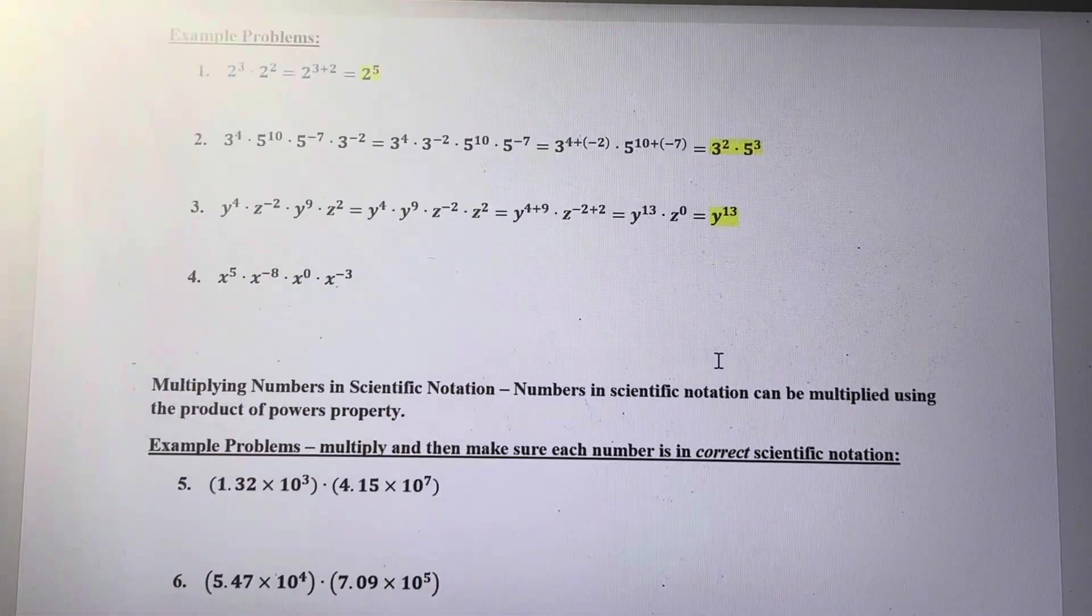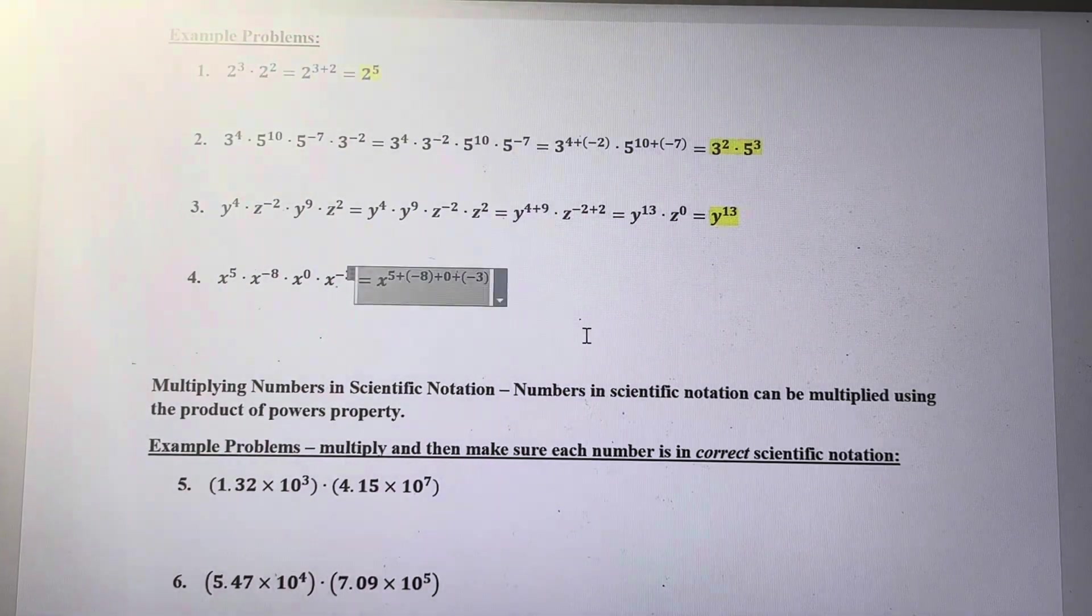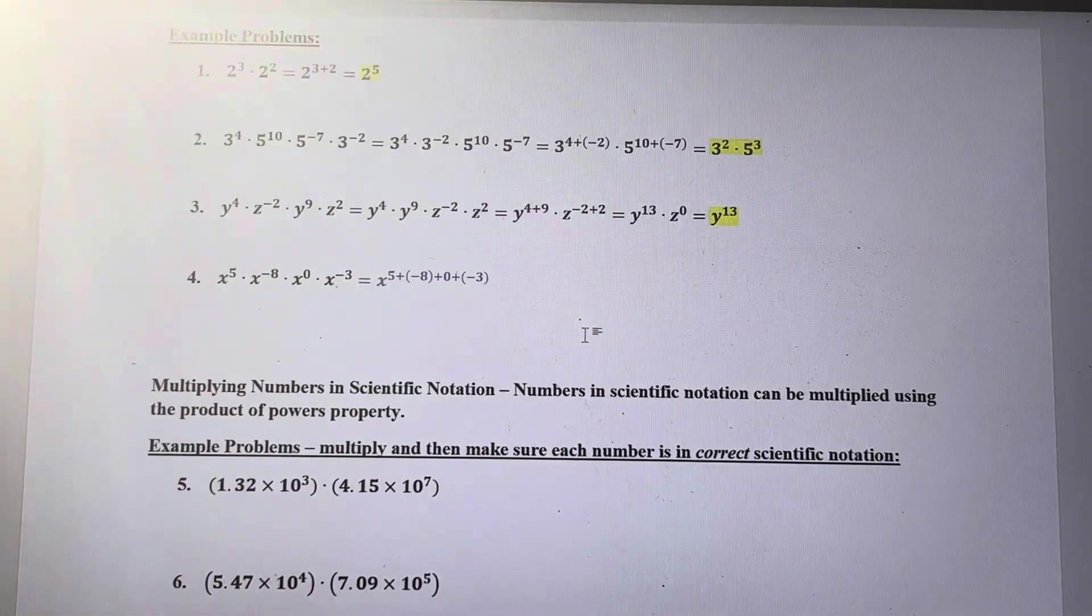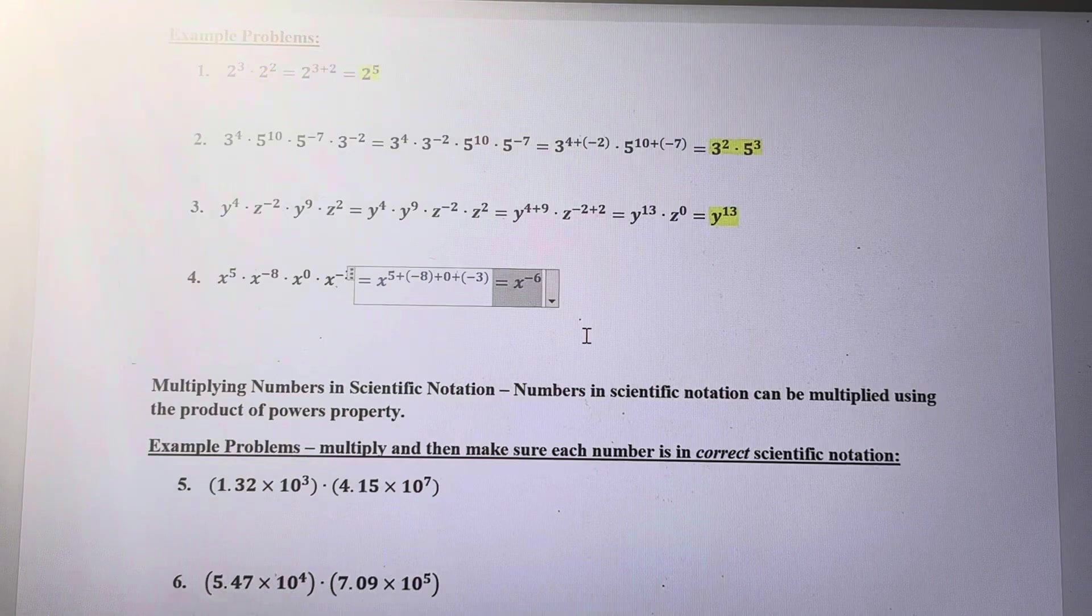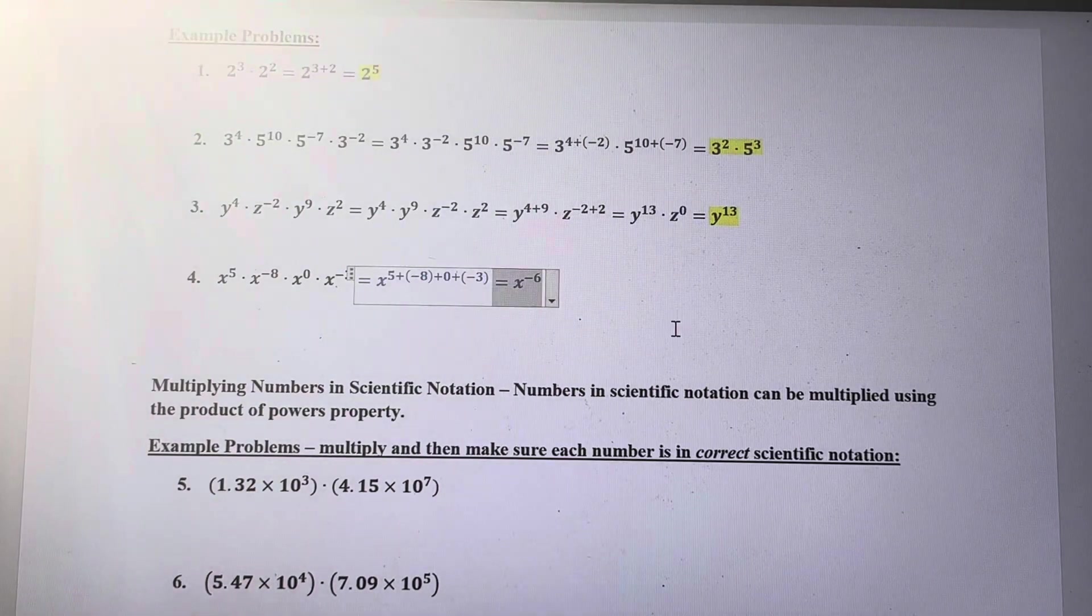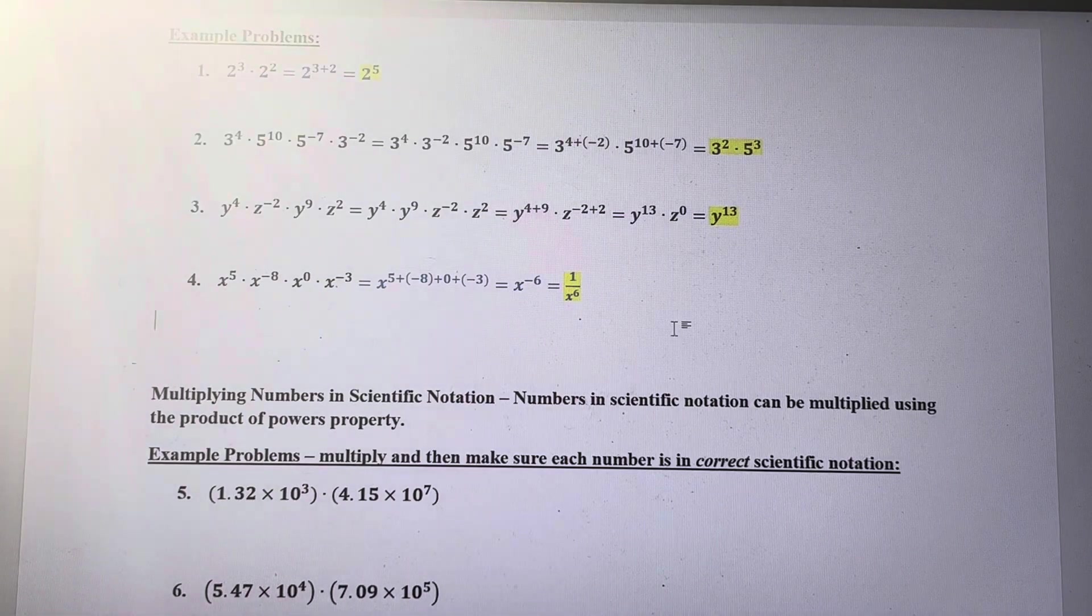And then finally, number 4 here, every base is the same, x, so I can just add all those exponents together. When I add those four digits together, I get negative 6. And I can't have a negative exponent, remember, so I'm going to move that to the bottom half of the fraction and get 1 over x to the 6th.